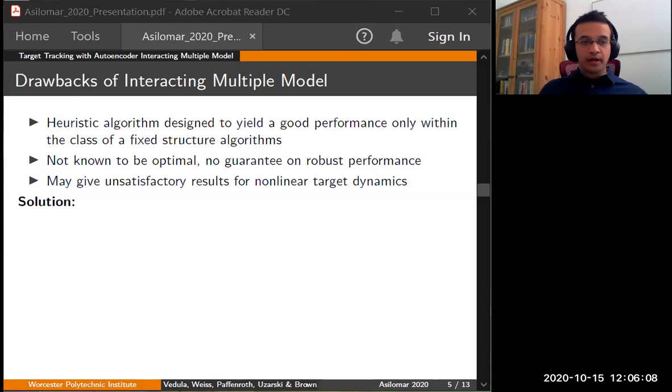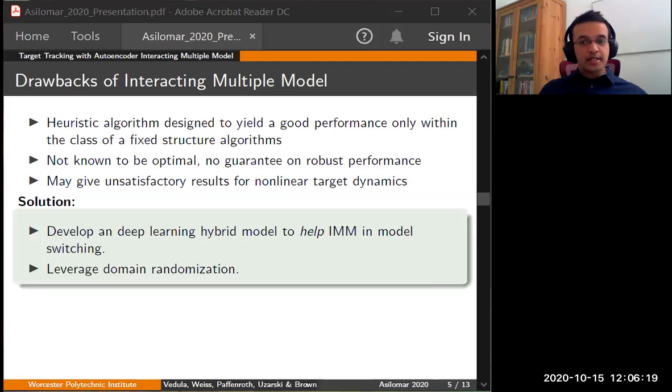What is the solution? Since the IMM is not an optimal approach, we might want to approach it from a data-driven point of view. In this talk, we present the deep learning hybrid model to assist IMM in model switching. And we also leverage a technique called domain randomization to account for its validity on real world data.